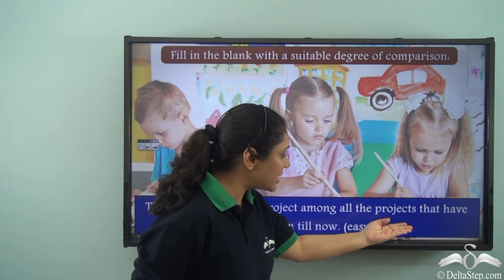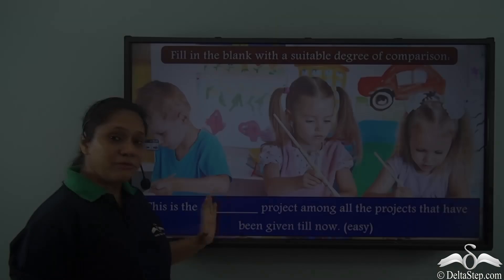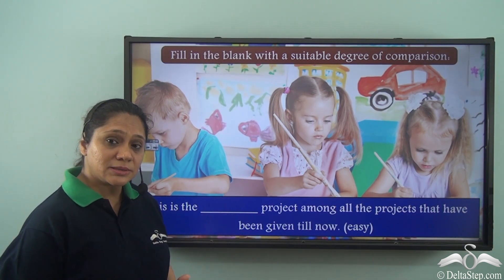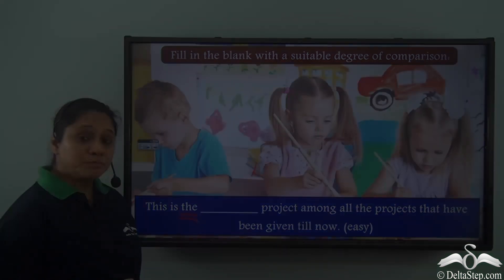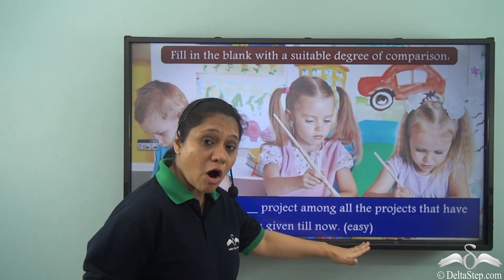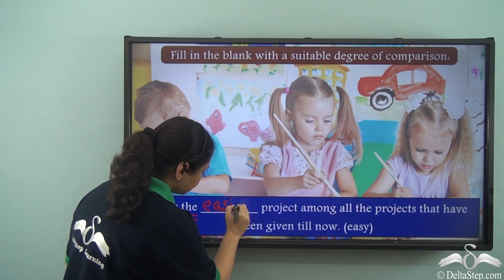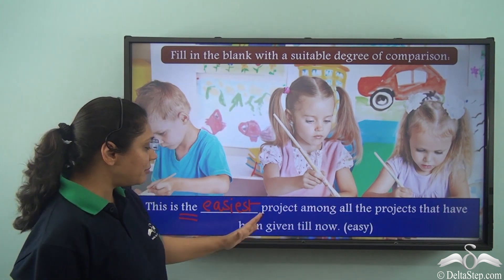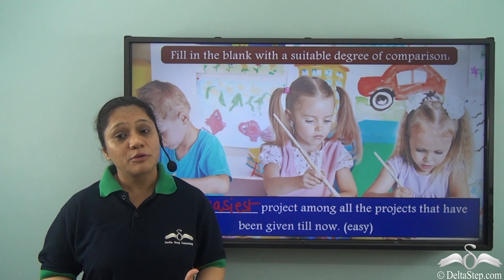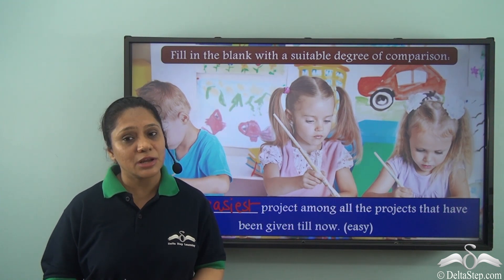Fill in the blank: 'This is the ___ project among all the projects that have been given till now.' The adjective given is 'easy.' We are comparing one project with many others, and 'the' is included, so we use the superlative degree. The superlative of 'easy' is 'easiest,' so the answer is: 'This is the easiest project among all the projects that have been given till now.' Today we have revised the various forms of adjectives showing the positive, comparative, and superlative degrees of comparison.